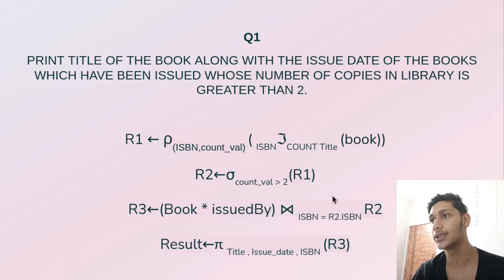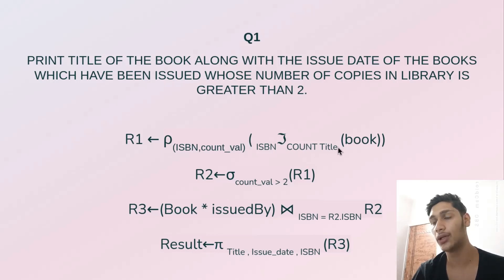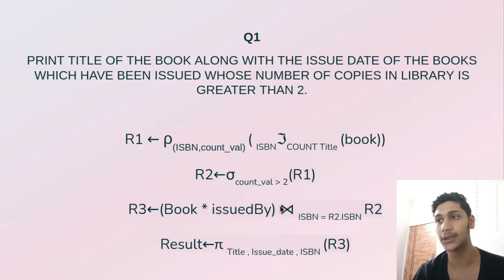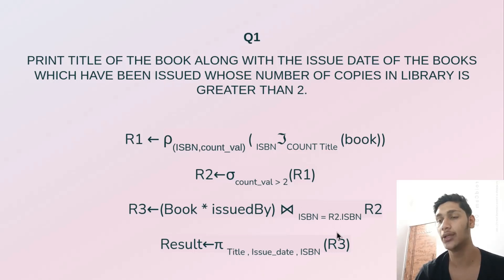For this problem, we first group the book by its ISBN and count all the titles under that ISBN, renaming the output columns as isbn, count. We then select all entries where count > 2. We perform a natural join between book and issued_by, then join with r2 where its ISBN equals r2.isbn, and extract the title, issue_date, and ISBN from r3.